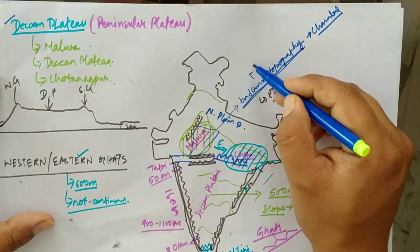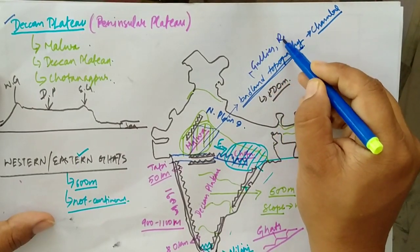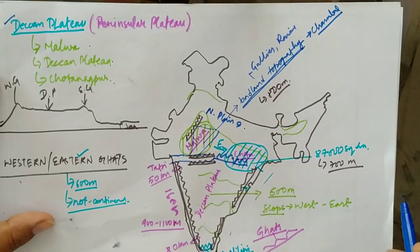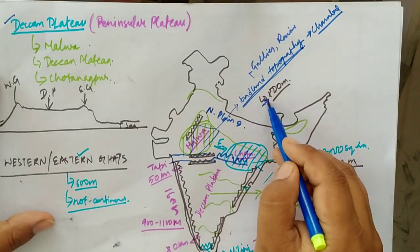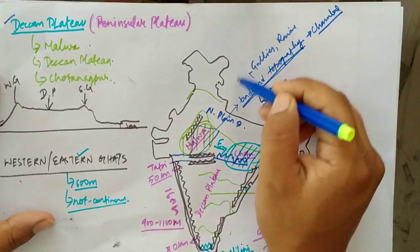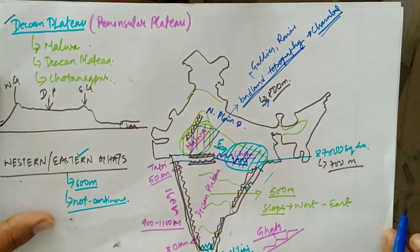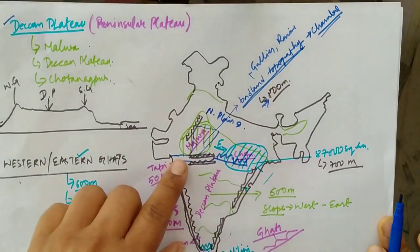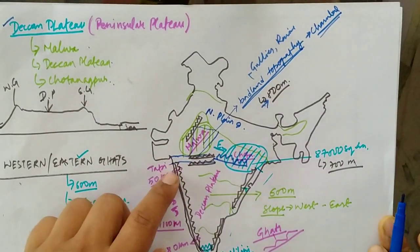The striking feature of the Malwa Plateau is its badland topography. Badland topography means it is exposed to several gullies and ravines, which are formed due to continuous erosion. The average height of the Malwa Plateau is 800 meters. This badland topography has been carved out by the work of River Chambal. Towards the south is the Deccan Plateau.